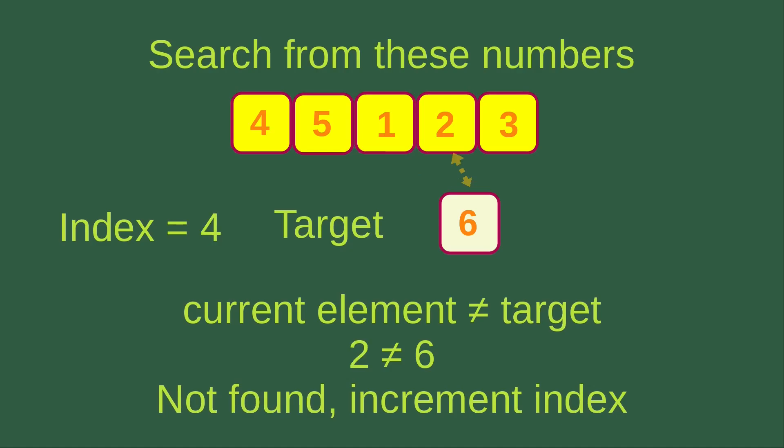Now the index becomes four. The current element is two, but the target is six, so we have not found the target yet. We increase the index to five. The current element is three, but the target is still six — we have not found the target from the list yet. We have to increment the index.